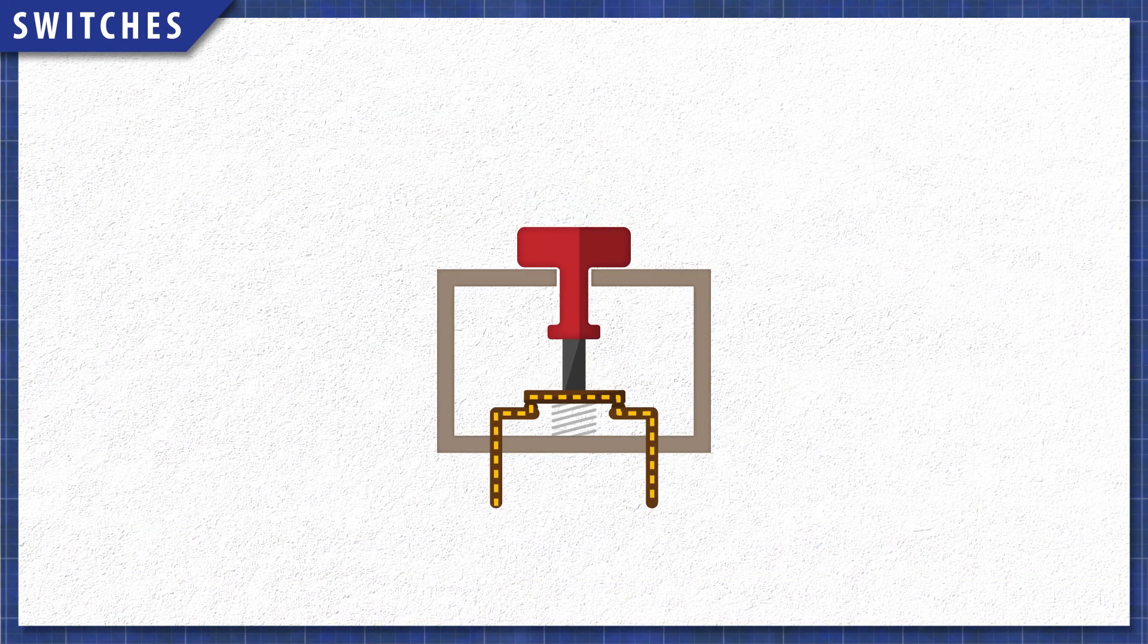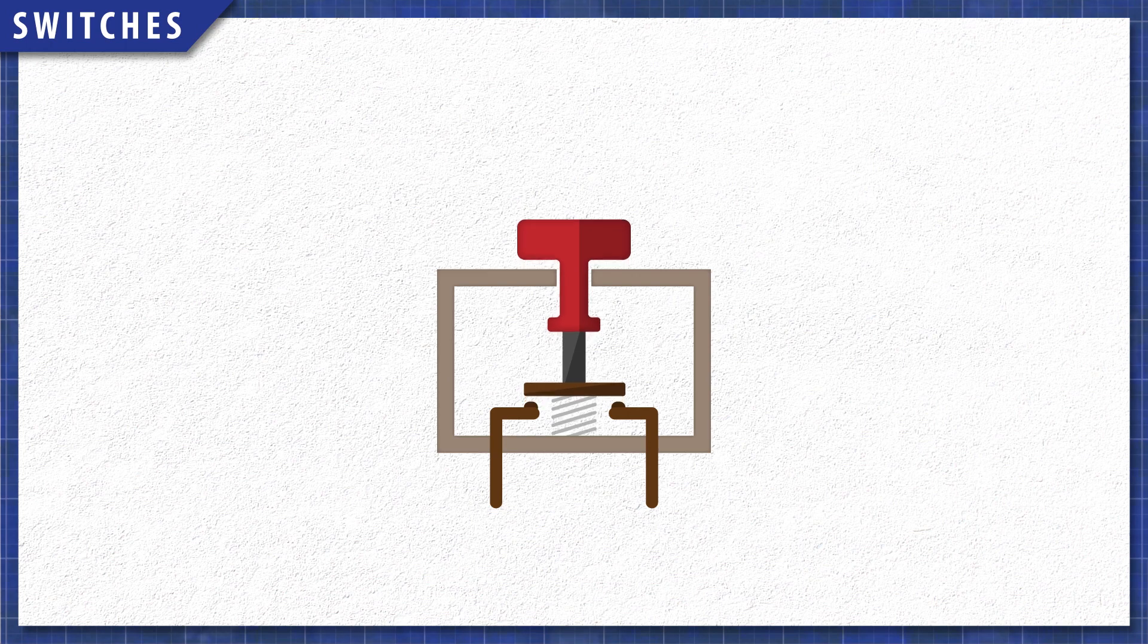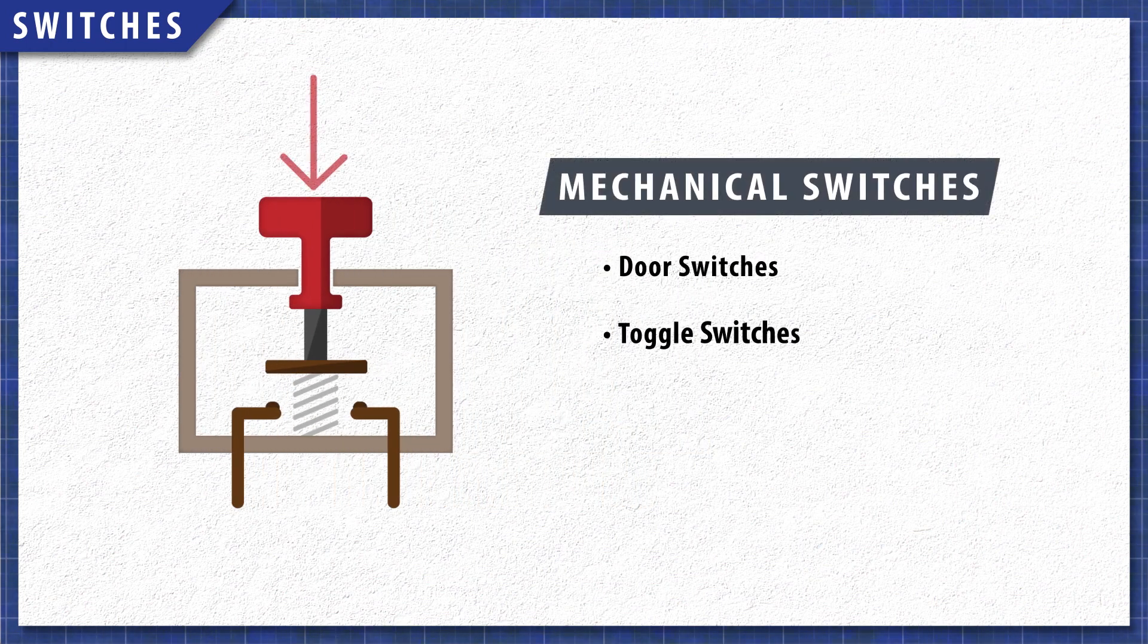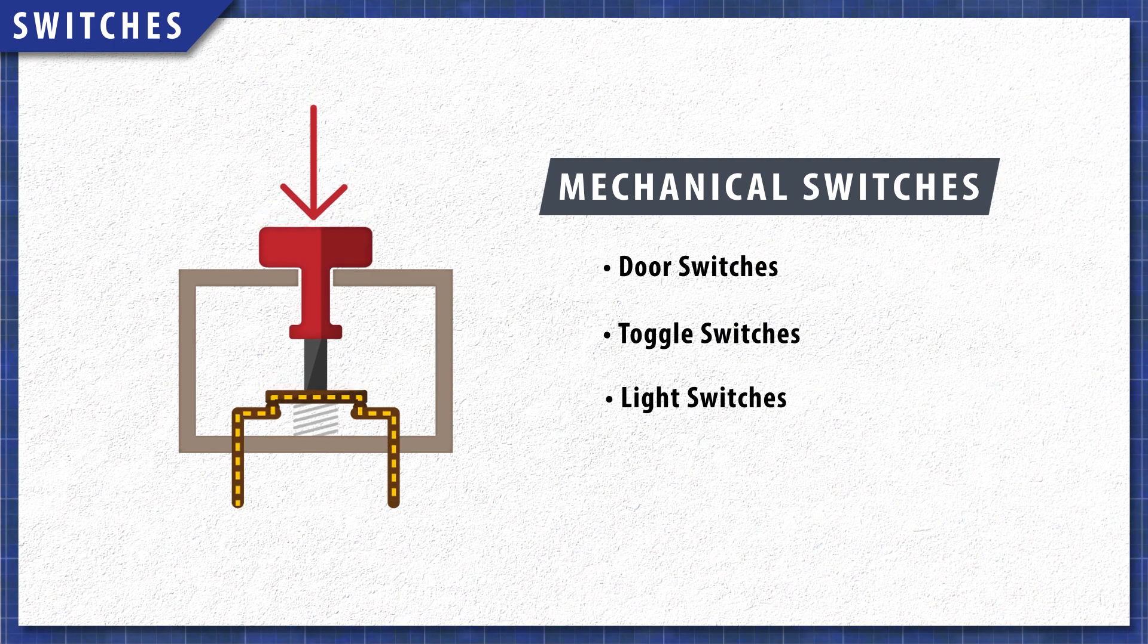Switches are components that connect and disconnect power in a circuit. Mechanical switches have contacts that are pressed together mechanically. This includes door and other toggle switches.